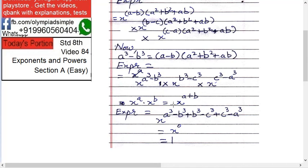X raised to a cube minus b cube plus b cube minus c cube plus c cube minus a cube. Now if you do this, it will become x raised to zero.